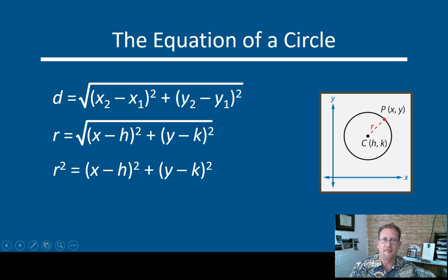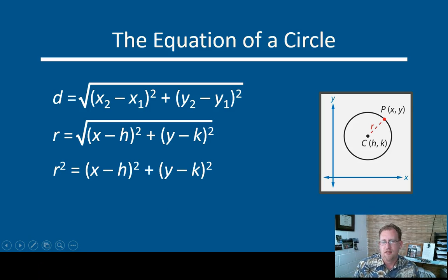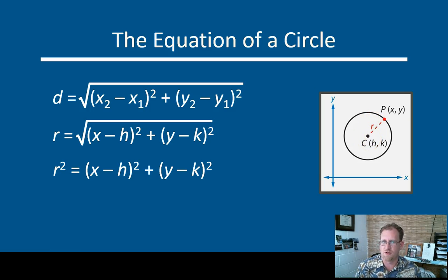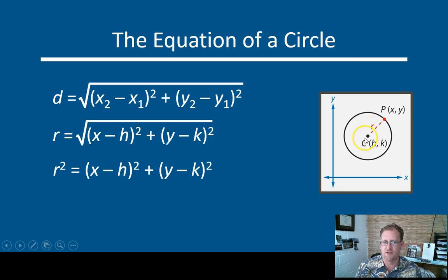Remember that the definition of a circle is a set of points a given distance from a center. Circle C is described as all the points that are our distance from C. A circle is the set of points that are all the radius R distance from the center C.